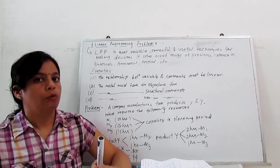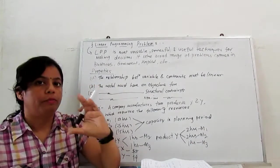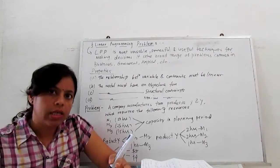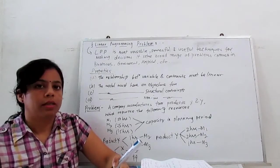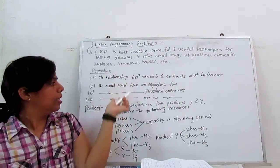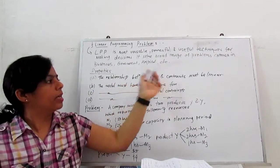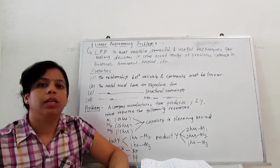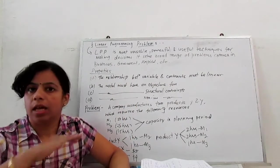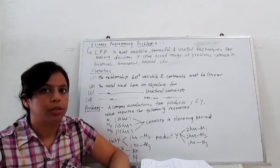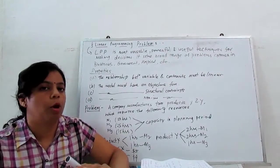So what are the properties of LPP? When we construct a linear programming problem, we must follow these properties. First, the relationship between variables and constants must be linear. The relationship between variable and constant is always a straight line, linear. It doesn't allow any curvy line.